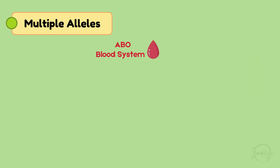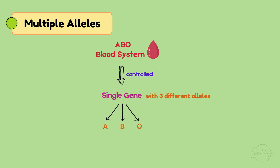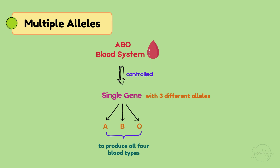The ABO blood group system is controlled by a single gene with three different alleles: Allele A, Allele B, and Allele O — also called I, the recessive form. These multiple alleles combine in different ways to produce all four blood types.